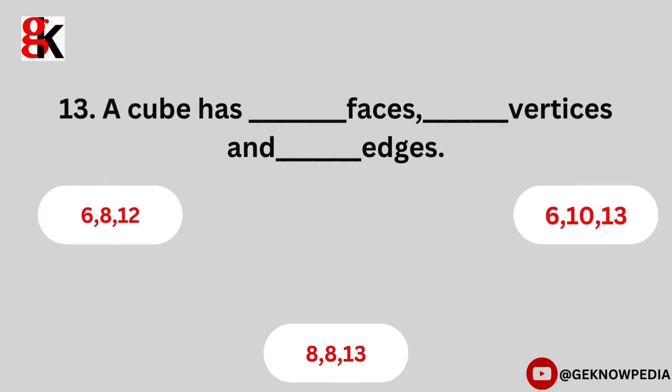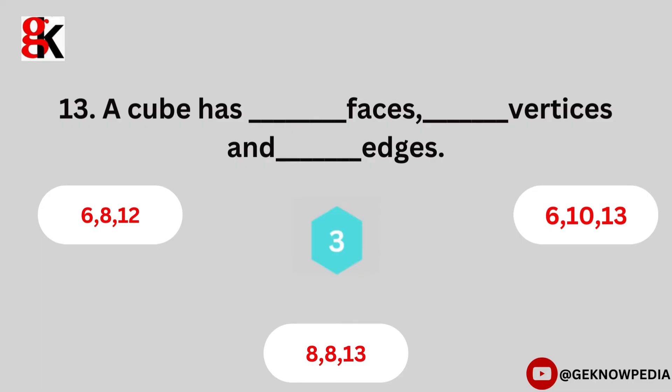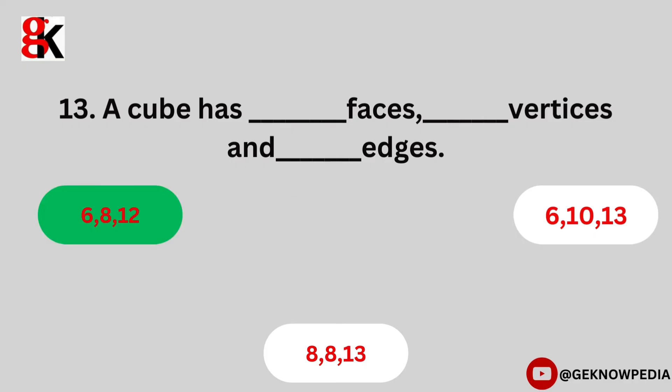Thirteenth question. A cube has faces, vertices, and edges: six, eight, twelve; or six, ten, thirteen; or eight, eight, thirteen. The correct answer is six, eight, twelve.